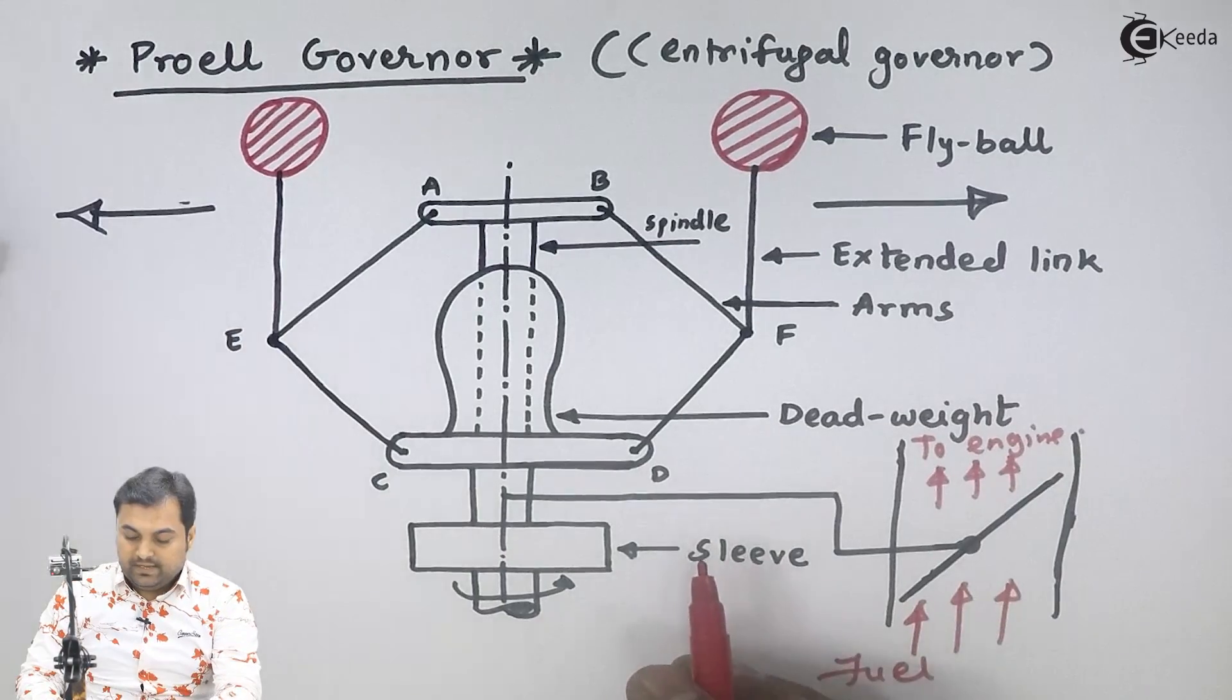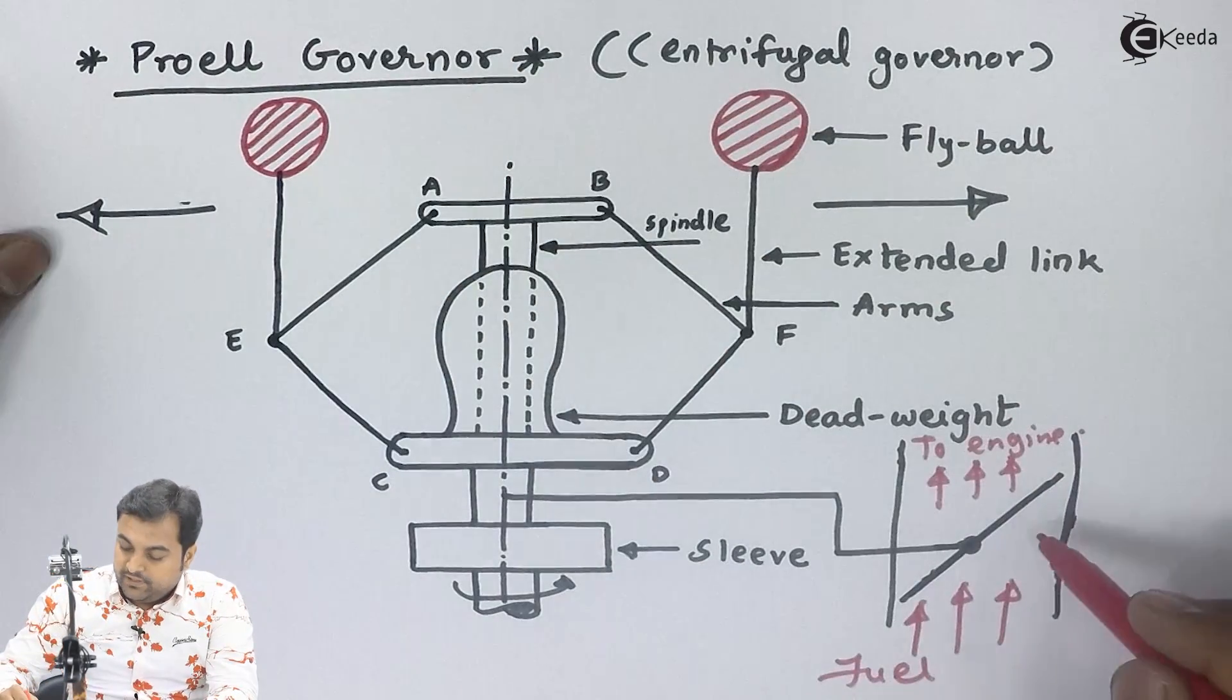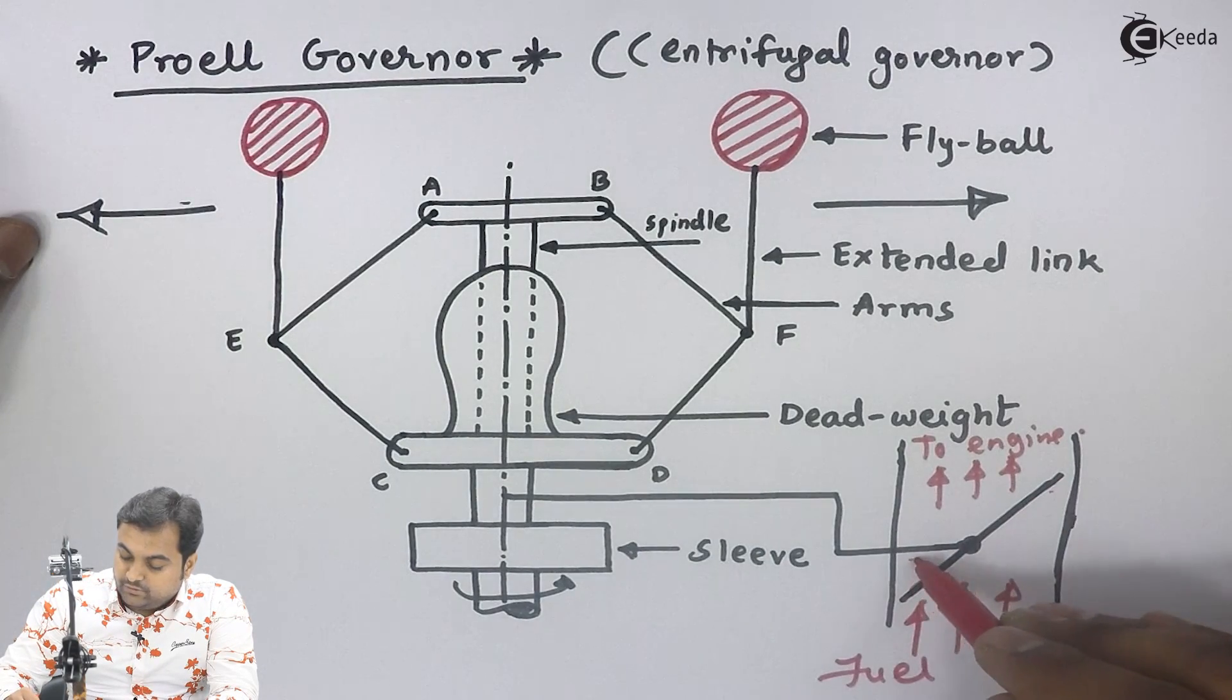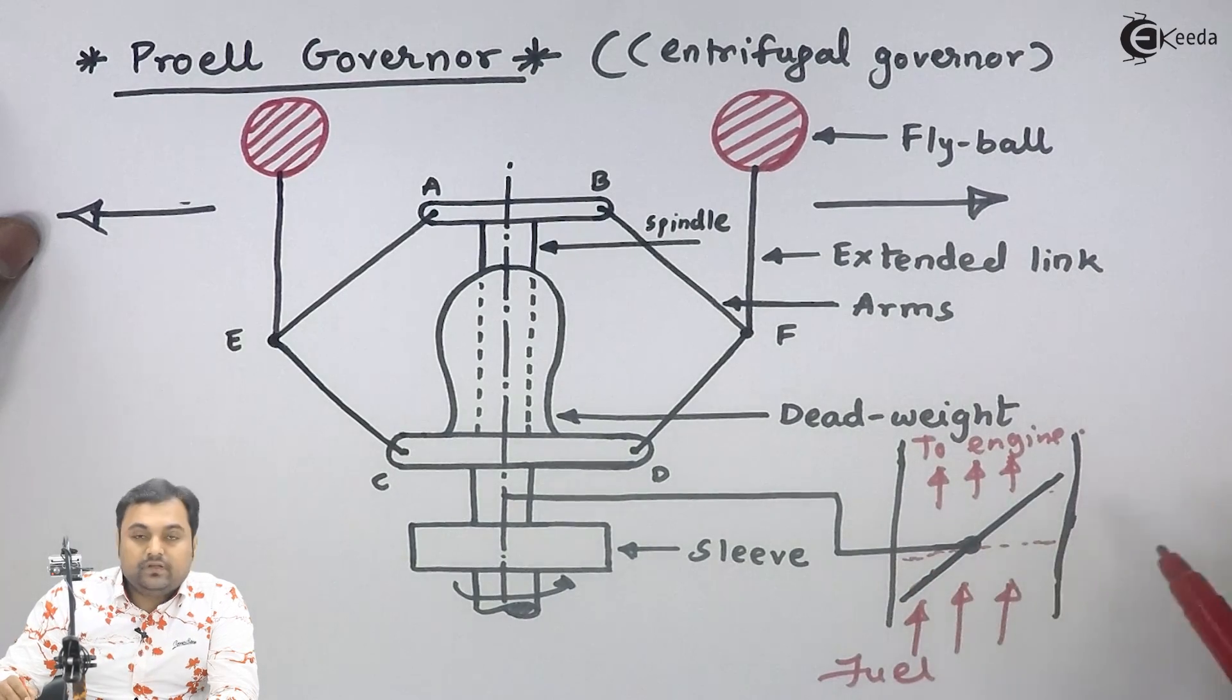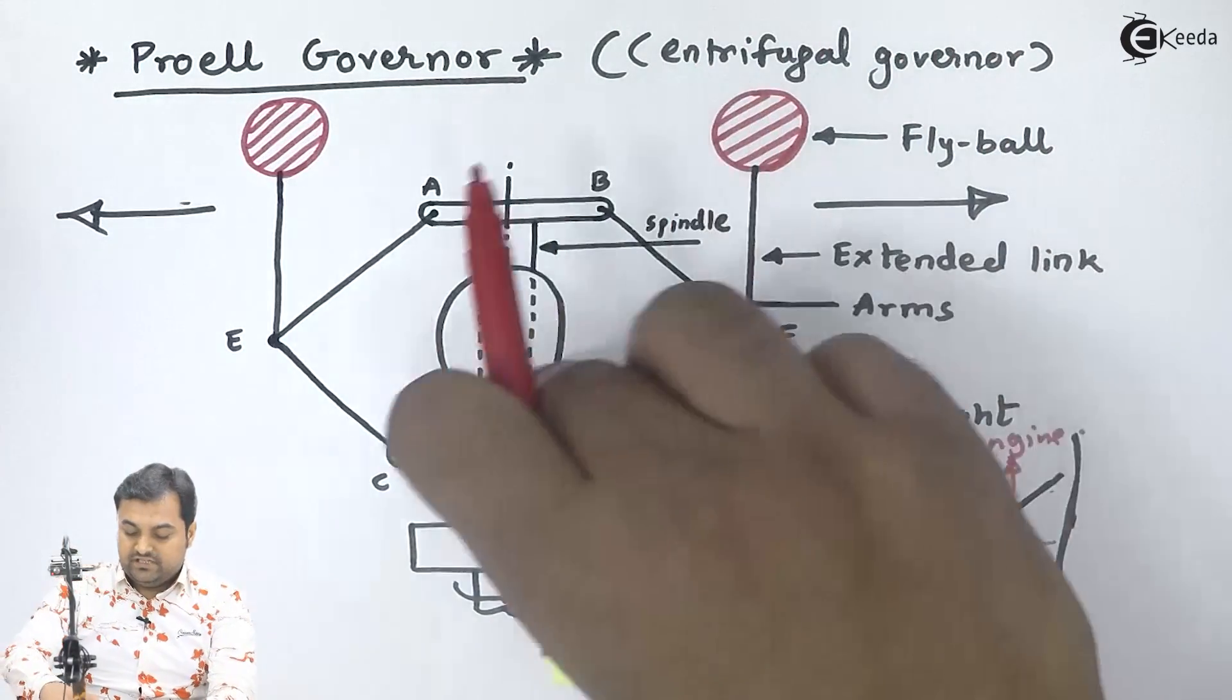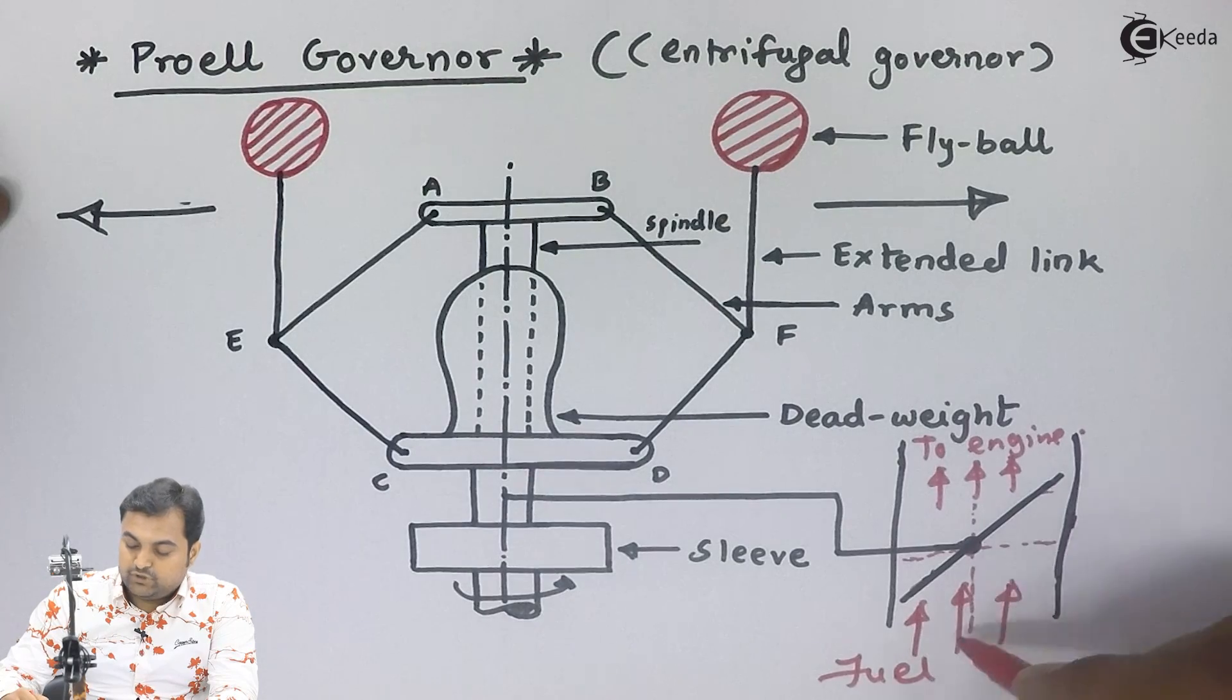As the speed of the engine increases, fly balls move out and sleeve moves upward. When the sleeve moves up, this passage gets blocked by the throttle valve. When the speed decreases, fly balls move inside, sleeve is pushed down, and the throttle valve opens the passage allowing more fuel.